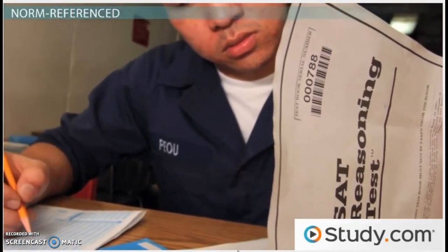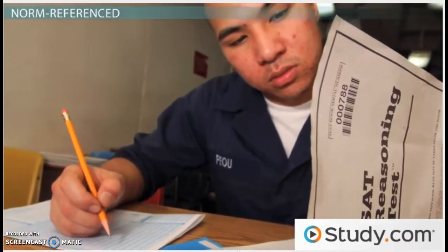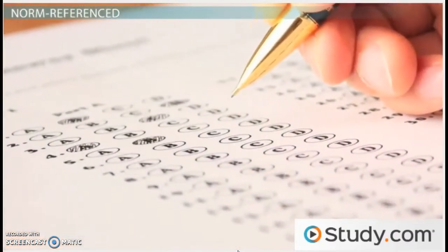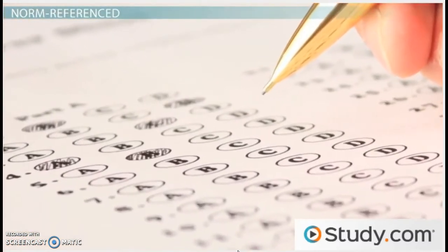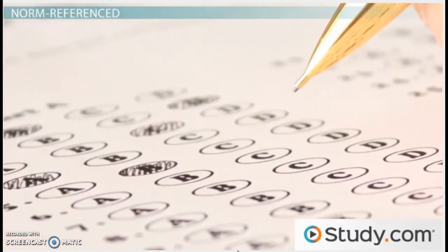Any time a test offers a percentile rank, it is a norm reference test. If you scored the 80th percentile, that means that you scored better than 80% of people in your group.